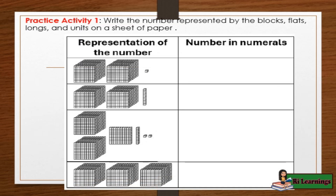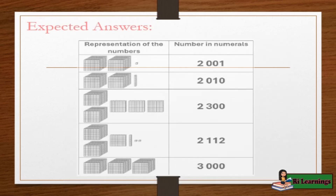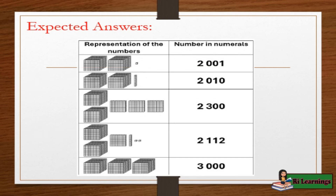Practice activity: Write the number represented by the blocks, flats, longs, and units on a sheet of paper. Expected answers: 1) 2,001; 2) 2,010; 3) 2,300; 4) 2,112; 5) 3,000.